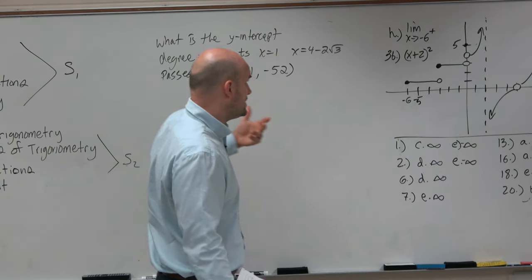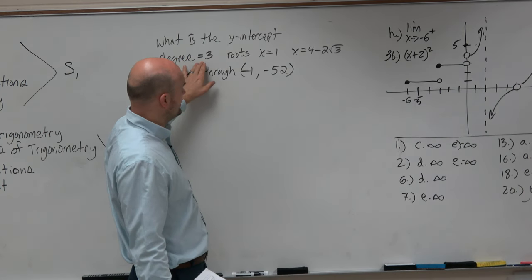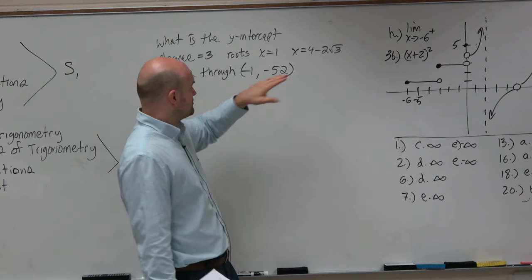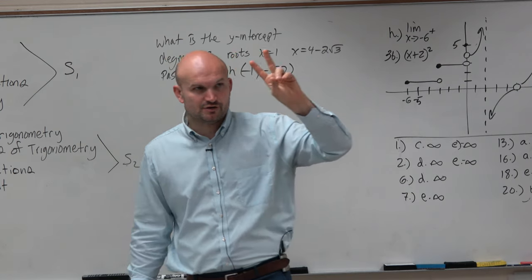So do we have enough information to find the polynomial equation? Well, they give us the roots. They say it has to be a degree of 3. So that should spark our interest. We only have two roots here. If I was to multiply those two roots and write them as factors, that would only give me a degree of 2.